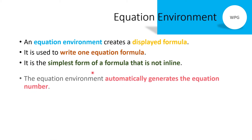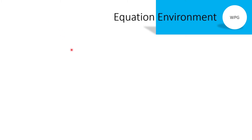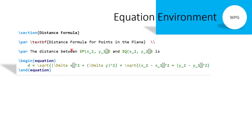The equation environment generates the equation number automatically. It is written as \begin{equation} and \end{equation}. Let's see an example — suppose we want to write the distance equation. Write the heading 'Distance Formula' with the section command and write some description below it. After that, start the equation environment.